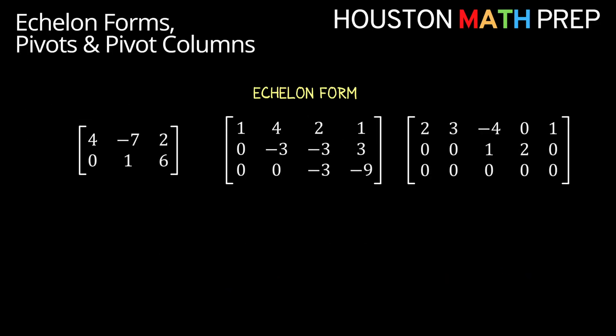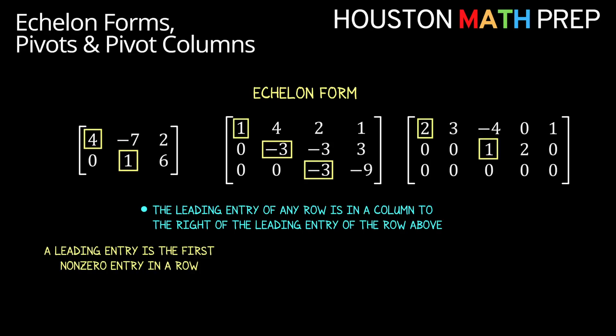For a matrix to be in echelon form, it needs to have a few things that are true about it. The first one being that what we call the leading entry of any row is in a column to the right of the leading entry of the row above it. What we mean by a leading entry is just simply the first entry in any row that is not zero.